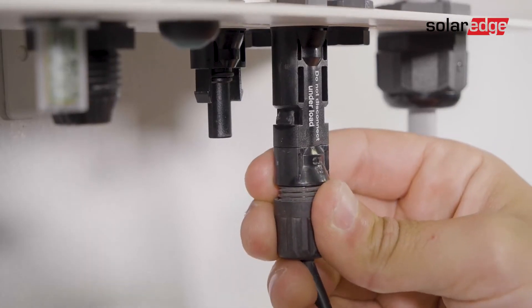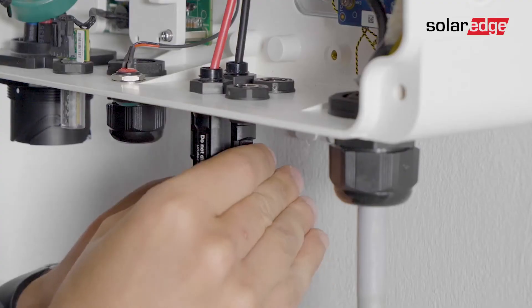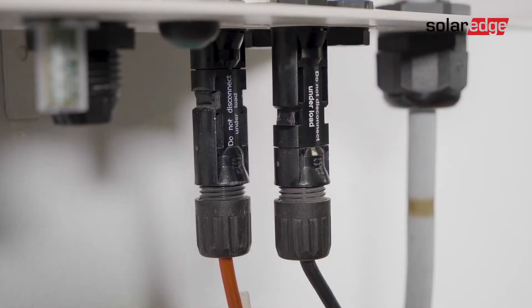Next we connect the DC connectors of each string to the DC plus and DC minus connectors according to the labels on the connection unit. Verify that the connectors are firmly inserted and locked.